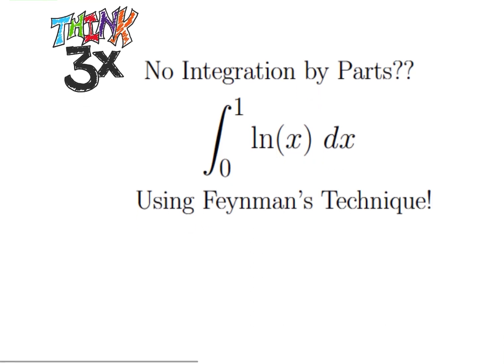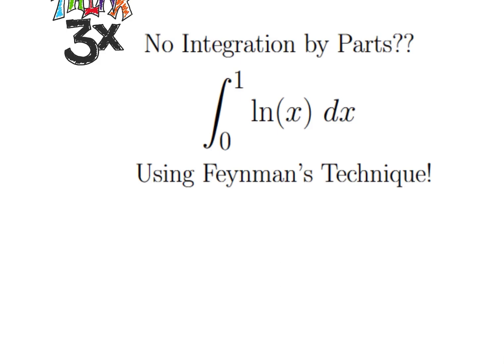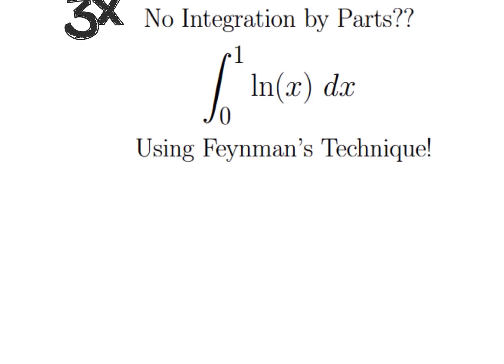So what we're going to do is first I want to notice that we have ln of x here. When does ln of a number pop up? It pops up when we take a derivative of x to some number. So if I take the derivative with respect to a of x to the a, then what I'm going to get out of this is the natural log of x times x to the a.